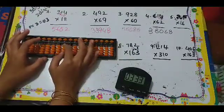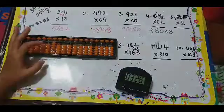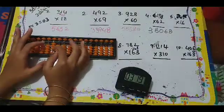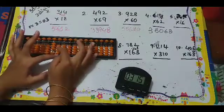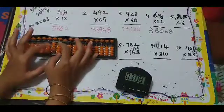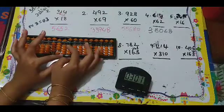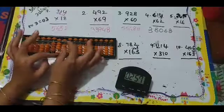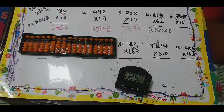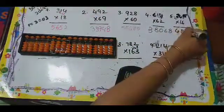The next question: 305 times 16. One times three is zero three. Next is zero zero. Next, one times five is zero five. Then six threes are 18: one eight. Next zero zero. Then six fives are 30: three zero. So the answer is 4,880.